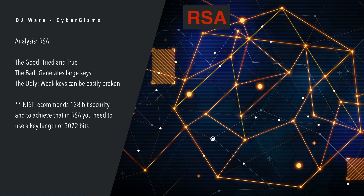RSA is tried and true — it's been around since 1978 and has gone through a number of iterations. The first key length I encountered was 56-bits — don't try that today, your message would be cracked in less than a minute. The bad is it generates large keys, and with weak keys it can easily be broken. NIST actually recommends 112-bit keys right now, but that's only going to last a couple more years before those become obsolete — that would be a key length of 2,048. The 128-bit security will push you to 3,072-bits, which will push you out another one or two decades before those become obsolete.